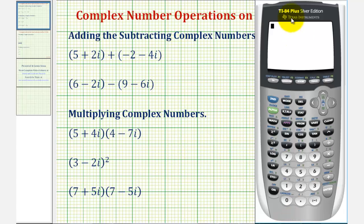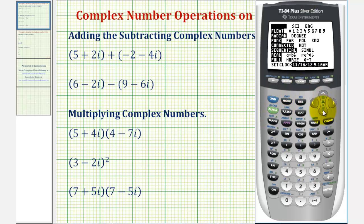The first thing we need to do is make sure that the calculator is in complex mode. So we'll press the mode key, scroll down to the third row from the bottom. We want to highlight A plus Bi, which is complex mode. So we'll press the right arrow once, and then press enter, and now the calculator is in complex mode.